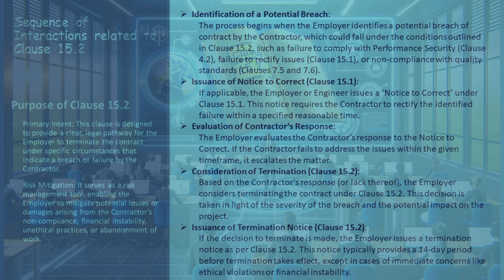The employer then assesses the contractor's response to the notice to correct. In cases where the contractor does not adequately address the issues within the stipulated timeframe, the situation escalates. Depending on the contractor's response or inaction, the employer contemplates terminating the contract under Clause 15.2, with this decision influenced by the breach's severity and its potential effects on the project. Should the decision to terminate be finalized, the employer issues a termination notice following Clause 15.2, typically including a 14-day period, except in instances of urgent concerns like ethical violations or financial instability.